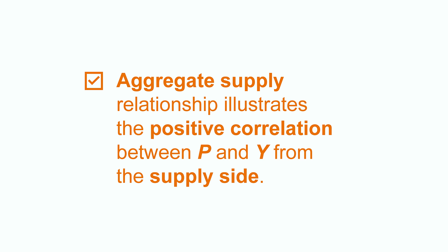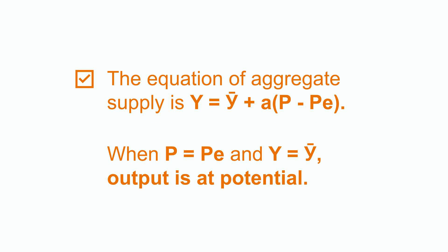To sum up, the aggregate supply relationship tells us the positive correlation between price and output from the production side of the economy. The equation of aggregate supply, y equals to y bar plus a times p minus p e, indicates that when p is equal to p e, y equals to y bar, output is at potential.